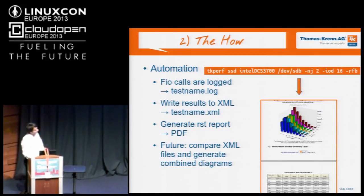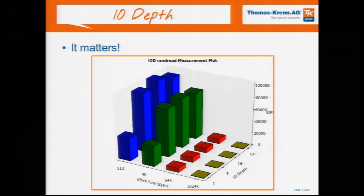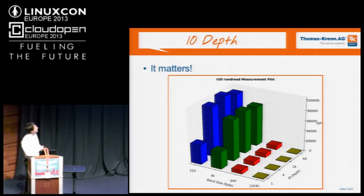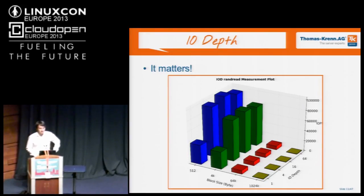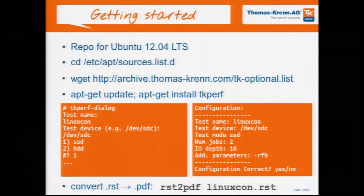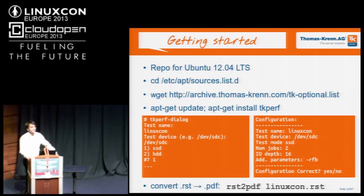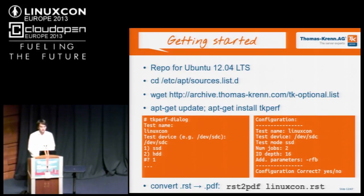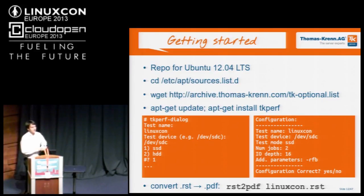The queue depth also matters, as you can see in this diagram. We have to run parallel jobs to get the most out of the SSD. With only one job, we only get about 40,000 IOPs, but with more jobs we come up to nearly 100,000. If you want to get started with TKPerf, it's very easy. If you're running Ubuntu, you can just activate our repository — which we offer for Ubuntu LTS versions — and simply run apt-get install TKPerf.